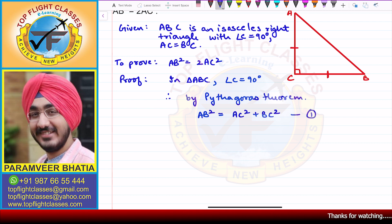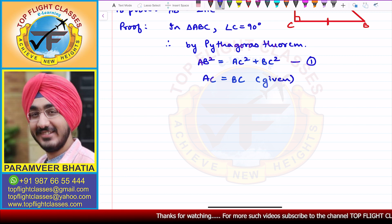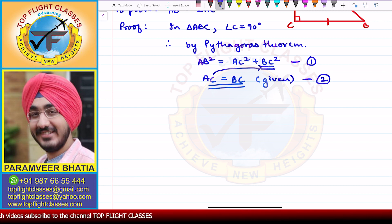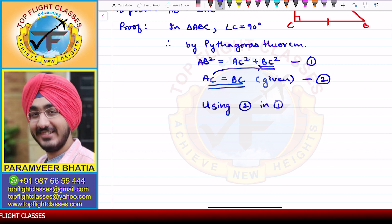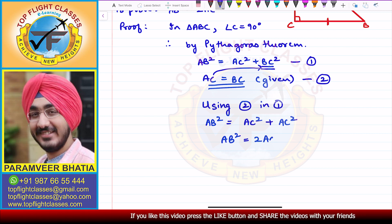Now, AC is equal to BC — this is given to us since ABC is an isosceles triangle. Let this be equation 2. We now substitute equation 2 into equation 1, replacing BC with AC. So AB square equals AC square plus AC square, which equals 2AC square.